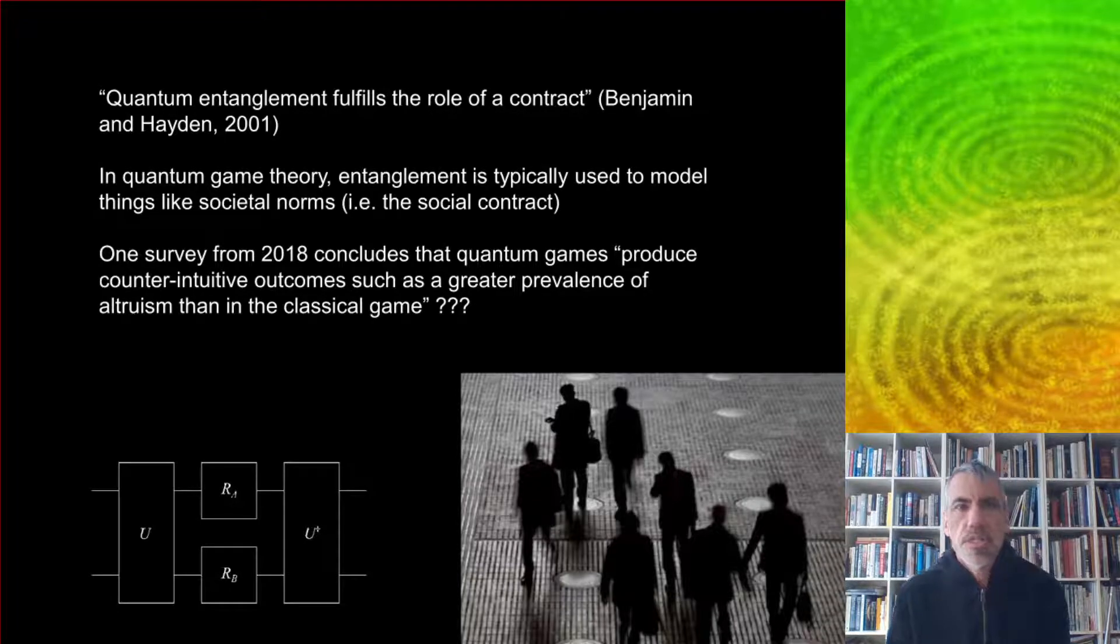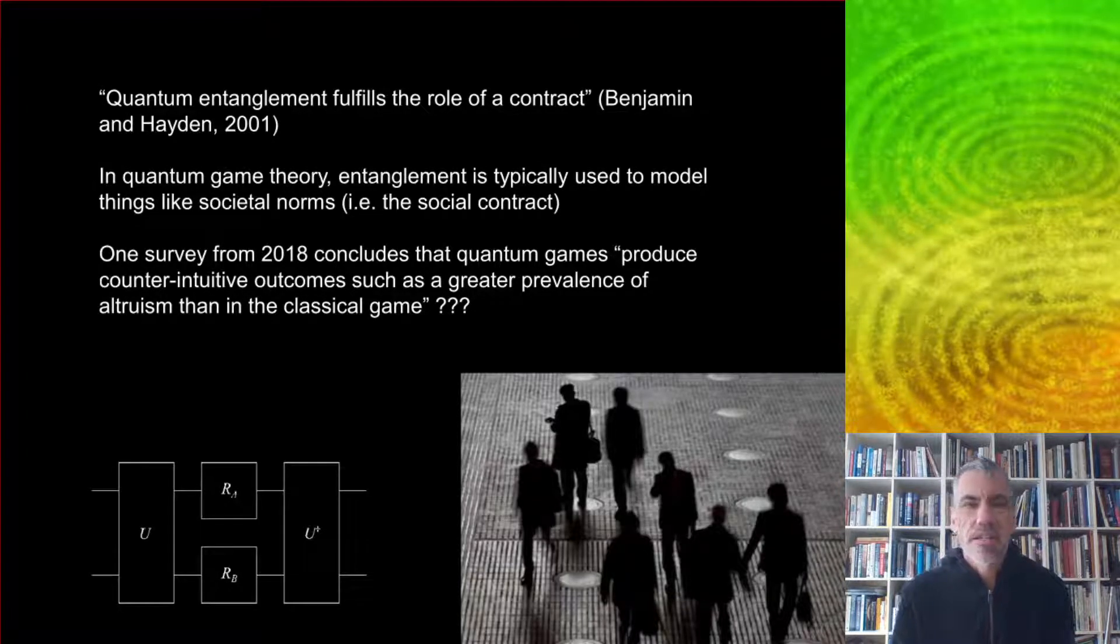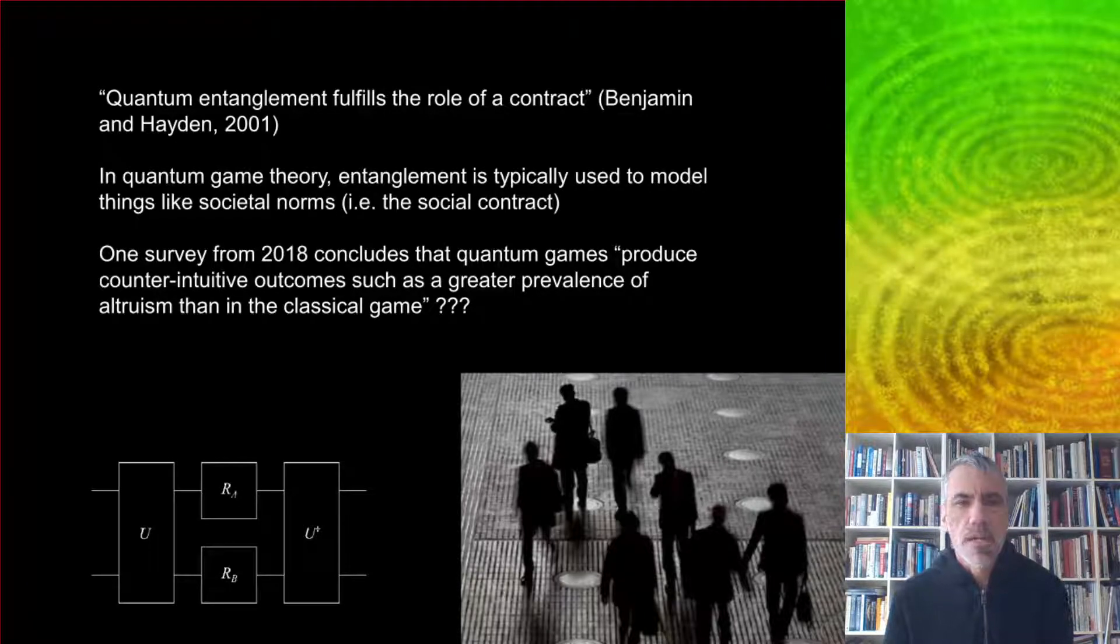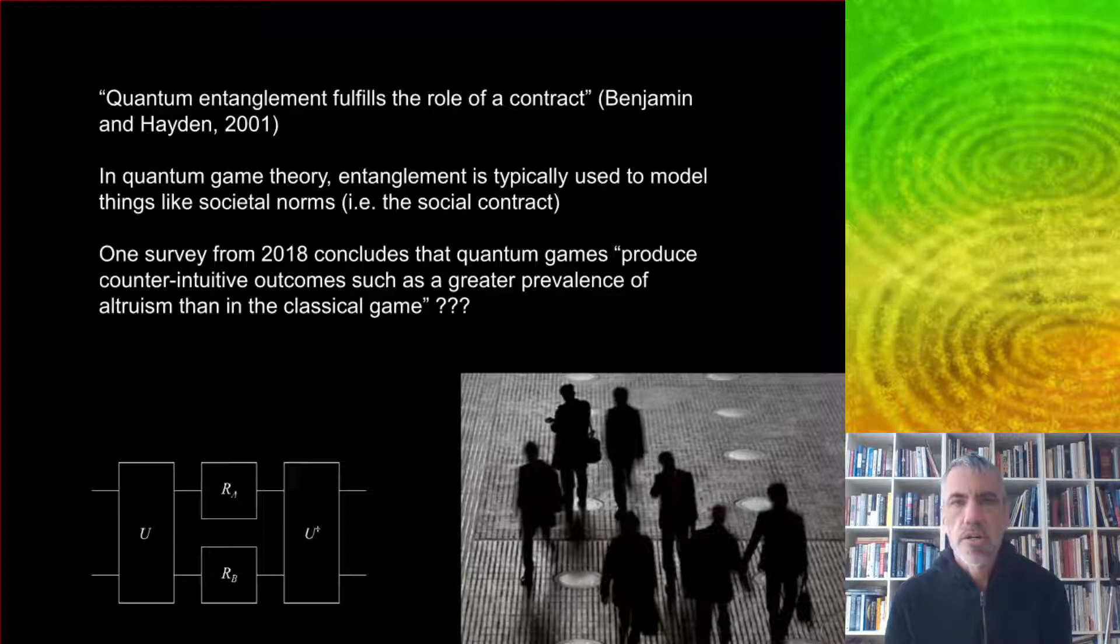What does this entanglement mean in game theory? In quantum game theory, it's usually thought of as representing some kind of a contract. It can be used to model things like societal norms, which are the social contract.